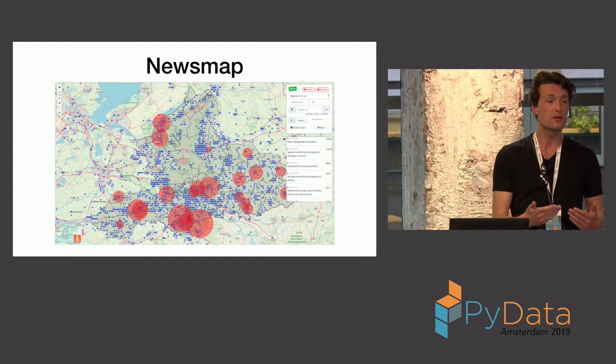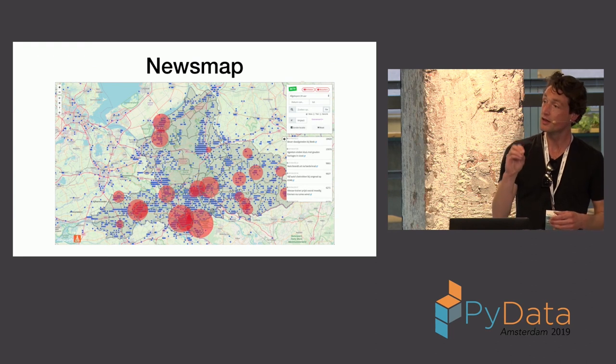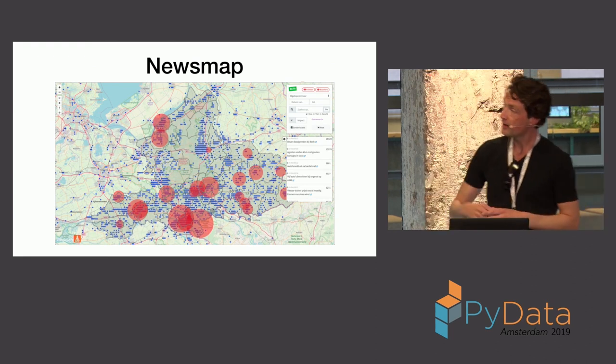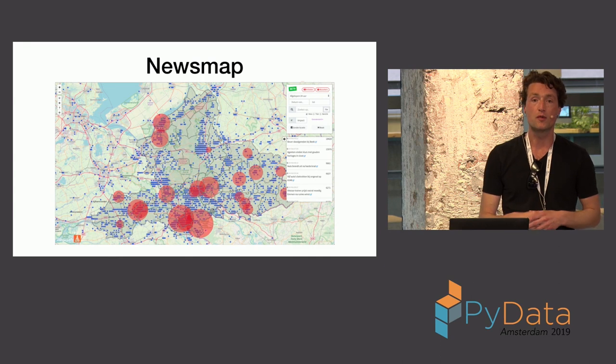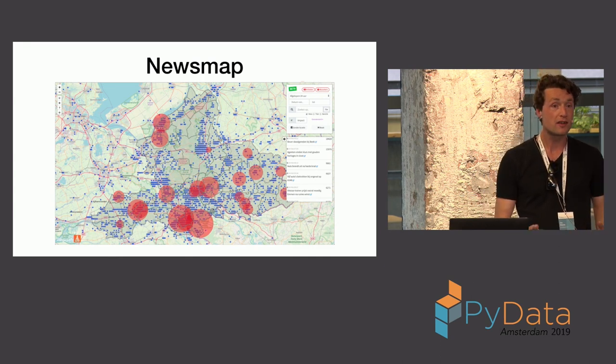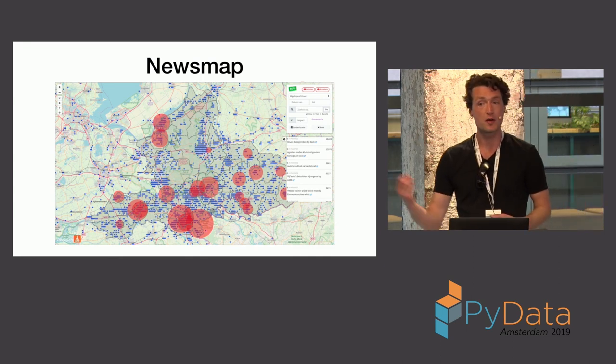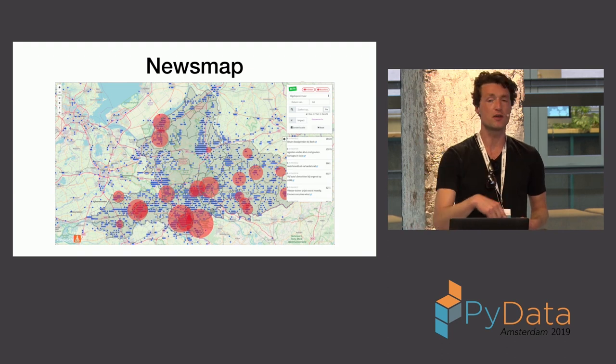You know, accompanying the news article saying, okay, this news applies to this place. And then, they can see here an overview of where the most articles are written. And where the users come from, in blue, who actually read those articles.